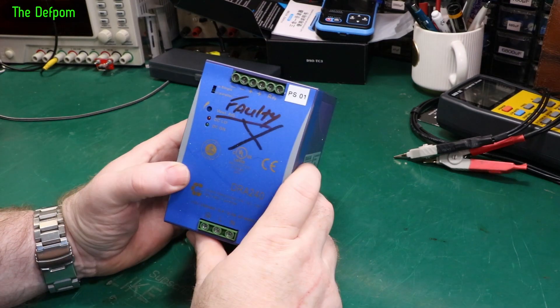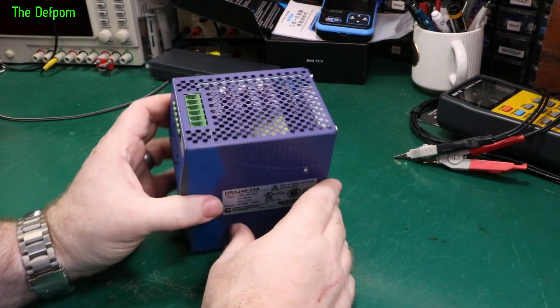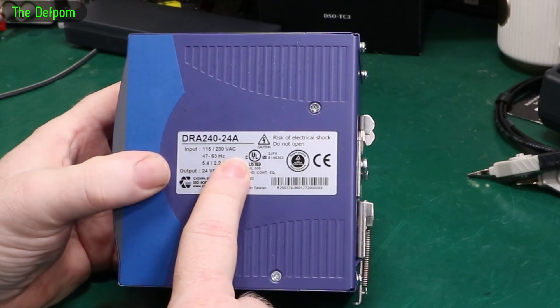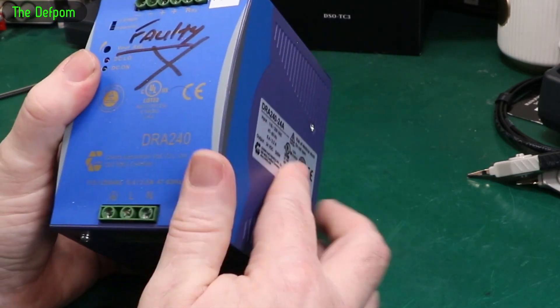So here I've got a power supply which was given to me because it's dead, apparently. I haven't tried it myself yet. We'll have a look at it, see what's going on. 230 volts in, 24 volts out, 240 watt rated. That's what it's supposed to do.